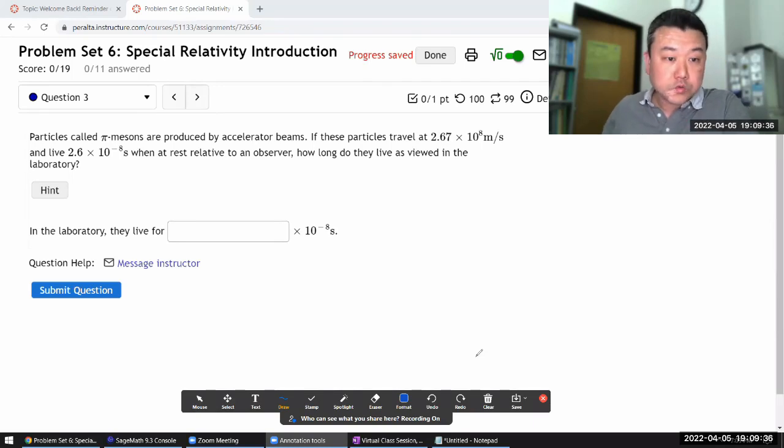Okay, question three. It says particles called pi mesons, these details don't really matter, are produced by accelerator beams. If these particles travel at this speed and leave...